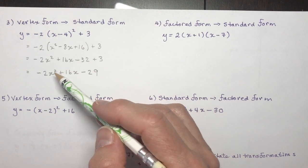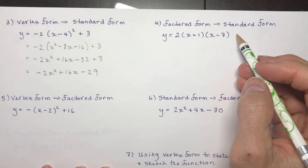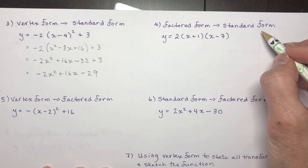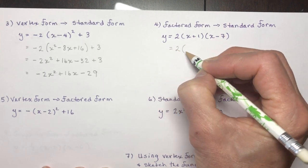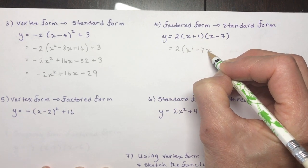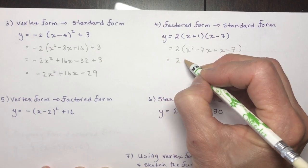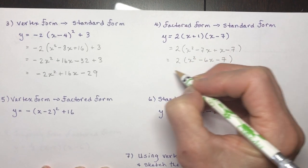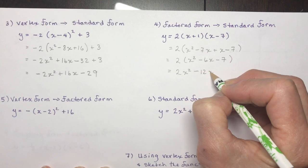Question four: factored form to standard form — again, just expand. Leave the 2 out front and expand the two binomials: x² − 7x + x − 7. Simplify what's in the bracket first, then multiply by 2: 2x² − 12x − 14.